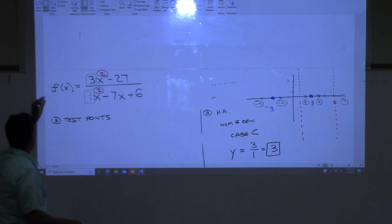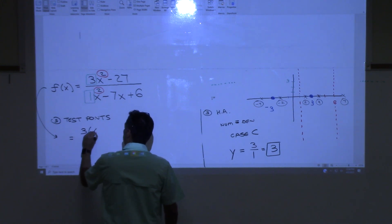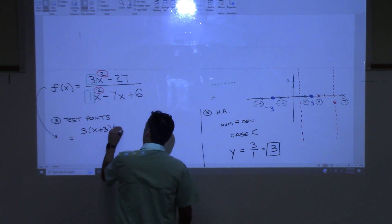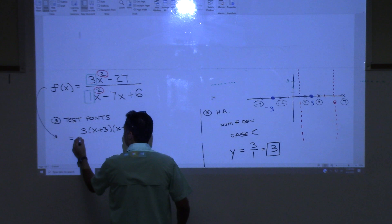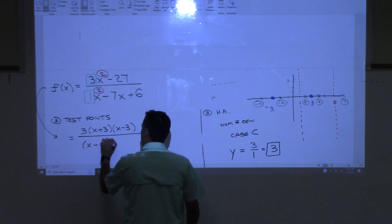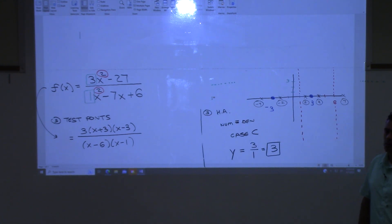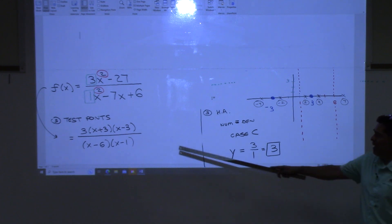This is not factored. If you wanted to do the shortcut, you would have to rewrite this function like this. We factored the top and got this, right? We did GCF, then difference of squares, and on the bottom it was x minus 6, x minus 1. That's the factored form. That's right. They're both factored.